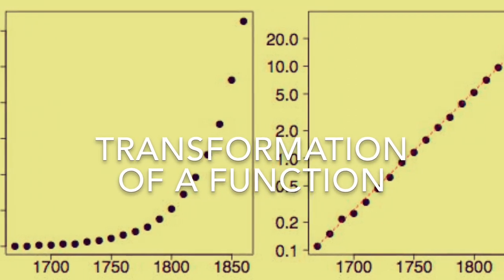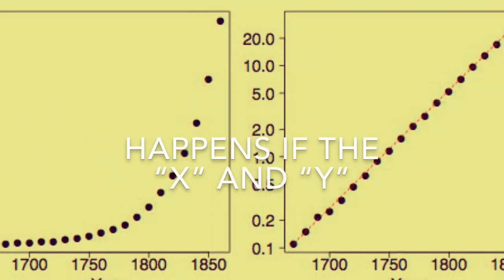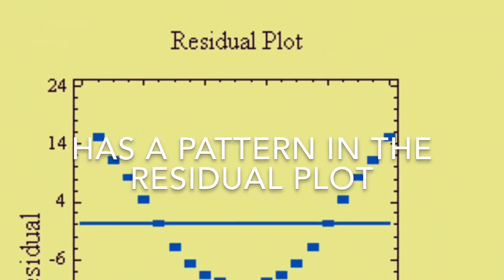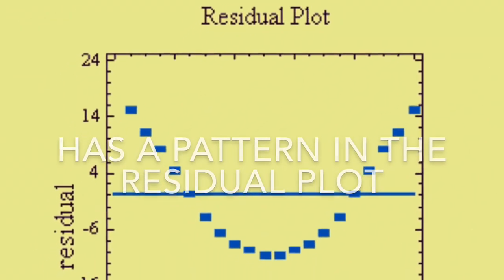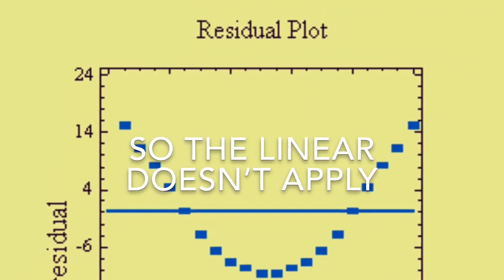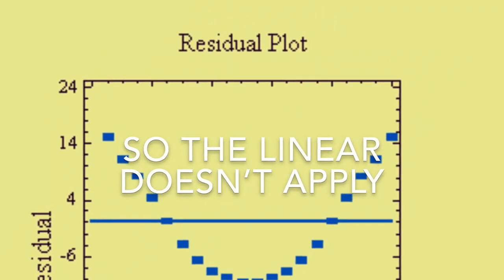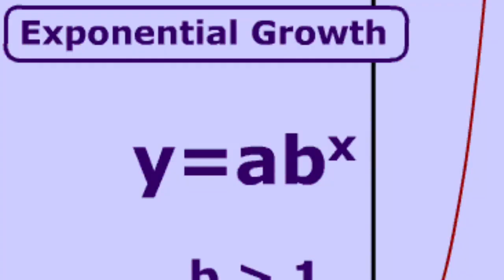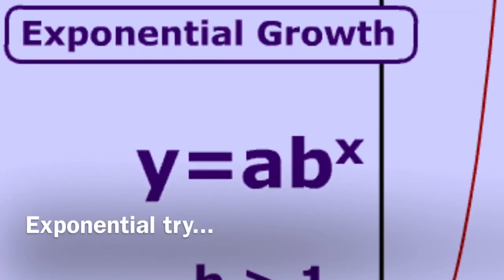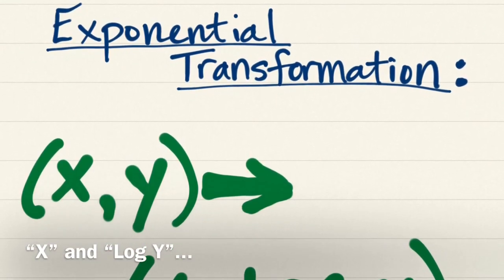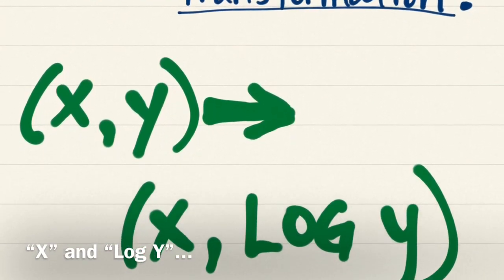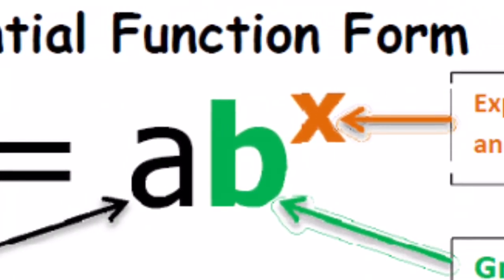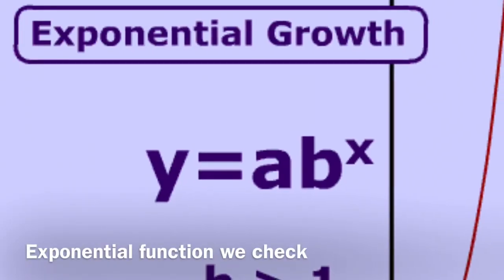Transformation of a function happens if the x and y has a pattern in the residual plot, and so linear doesn't apply. Exponential trial: x and log y, y equals ab to the x — exponential function we check.